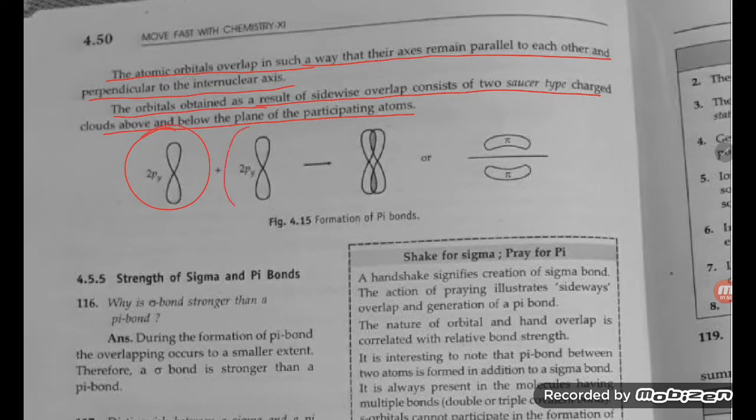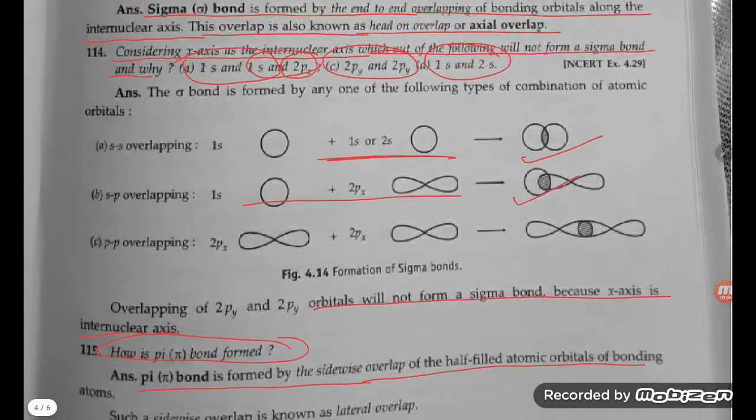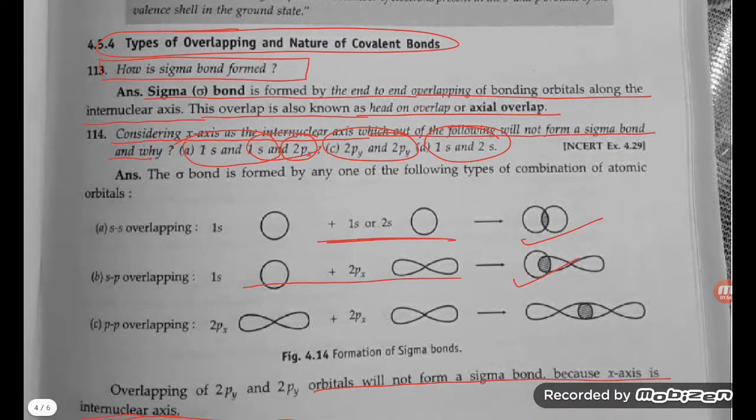2py and 2py form a pi bond, as you can see here. Now we will study the strength of sigma and pi bonds.